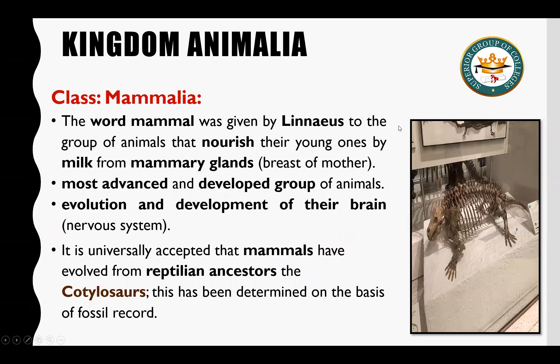The word 'Mammals' was used by Carlos Linnaeus, referring to mammary glands used to nourish young ones with milk. These mammary glands are present on the breast of the mother. Most advanced organisms are mammals — they are the most complex organisms, with the most advanced and complex nervous system and brain.